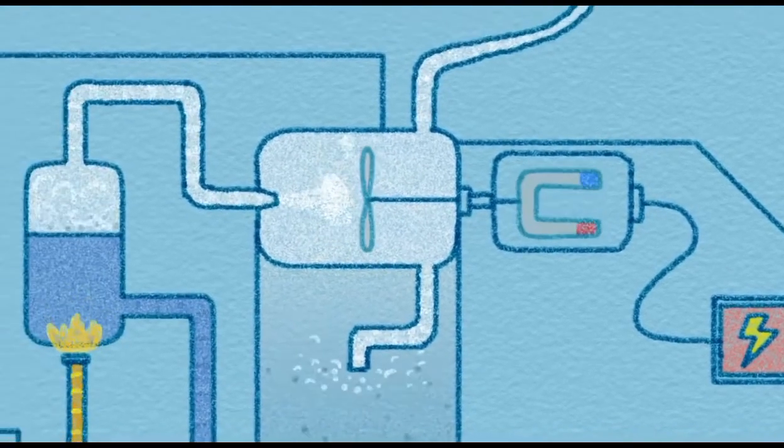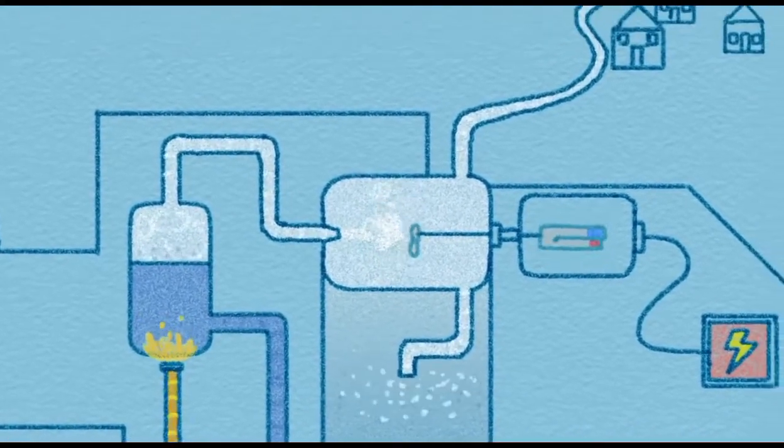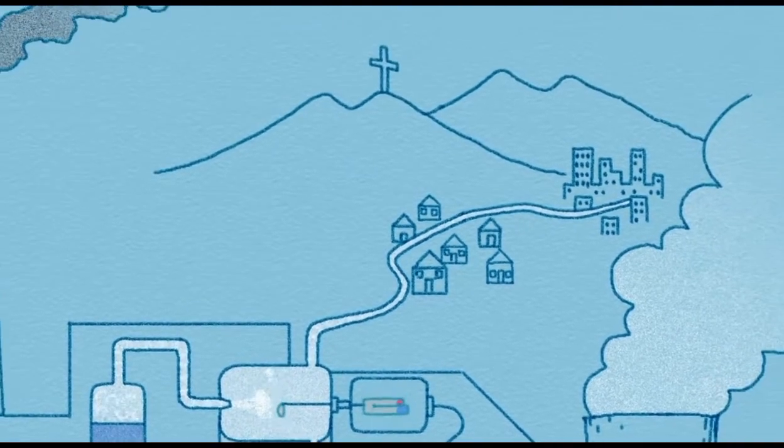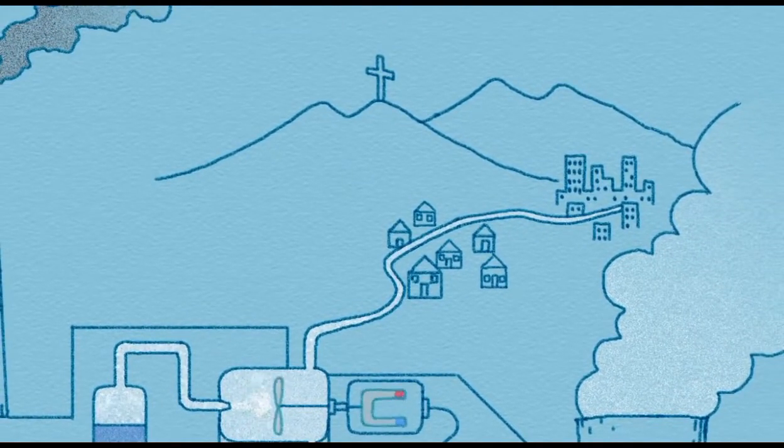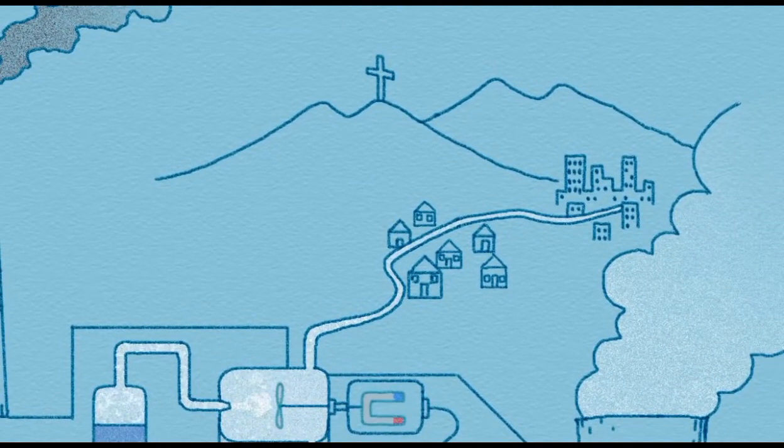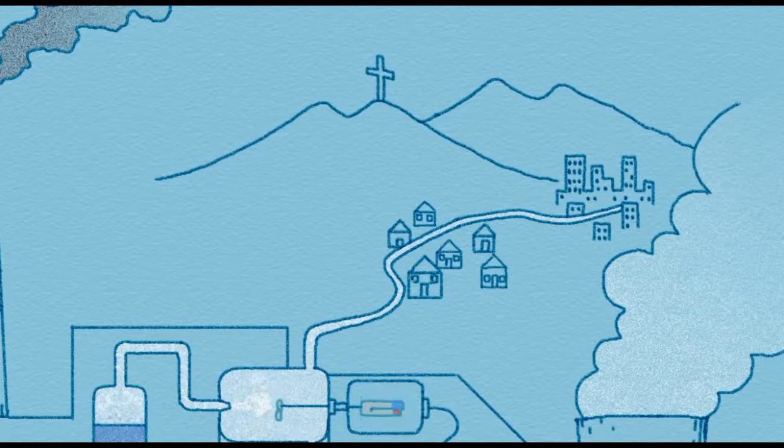Lastly, the steam is separated. Some of the steam is distributed to the surrounding cities and villages via a network of pipes to provide heating. This process is known as district heating.